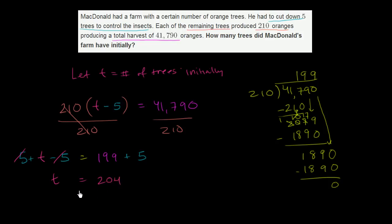Now, I told you there's multiple ways to do this. You could have, instead of dividing both sides by 210, you could have decided to distribute the 210. And then you would have ended up with 210 times t minus 5 times 210. Actually, let me just multiply it out so we save some space. 5 times 210 is 1,050. So 210t minus 1,050 equals 41,790.